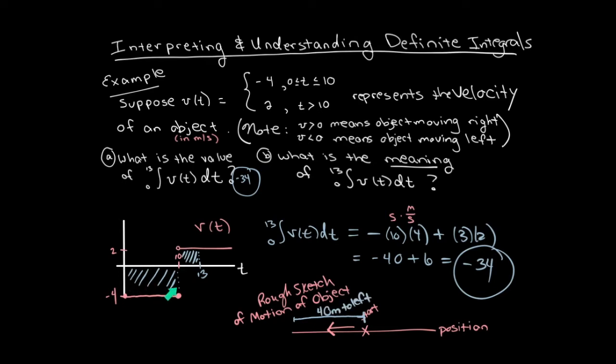What happens after that? After 10 seconds, the velocity jumps up to positive 2 and the object starts moving to the right. How far does it travel from t equals 10 to t equals 13? Well, we multiply the velocity of 2 times 3 seconds. We get 6 for moving right. As you can see, with 40 left and 6 right, can you guess the answer to part B? What is the meaning of this negative 34?